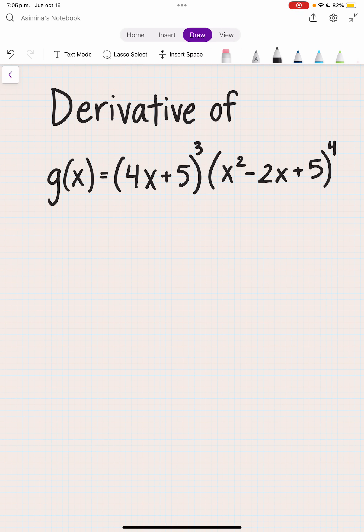In this video, we're going to set up how to find the derivative of (4x + 5)³ times (x² - 2x + 5)⁴. We're going to want to use the product rule.